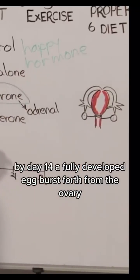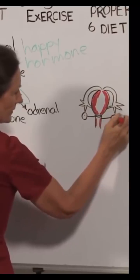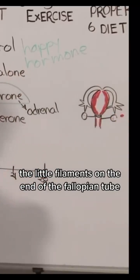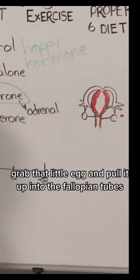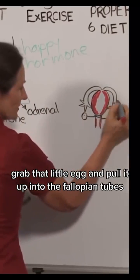By day 14, a fully developed egg bursts forth from the ovary. The little filaments on the end of the fallopian tube grab that little egg and pull it up into the fallopian tubes.